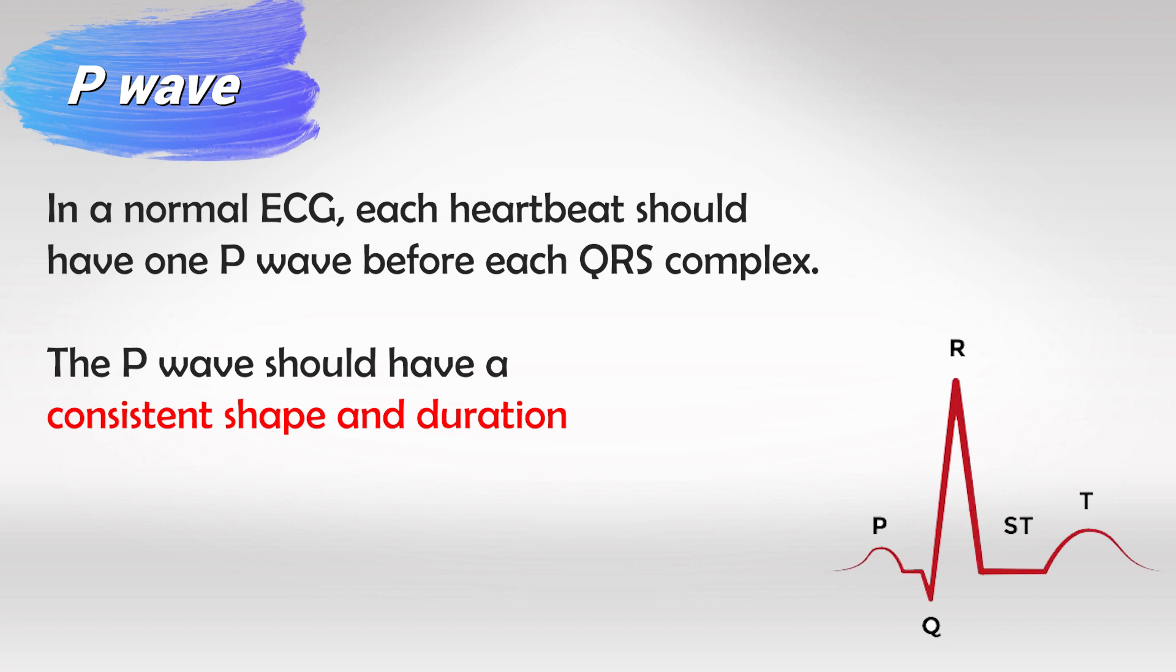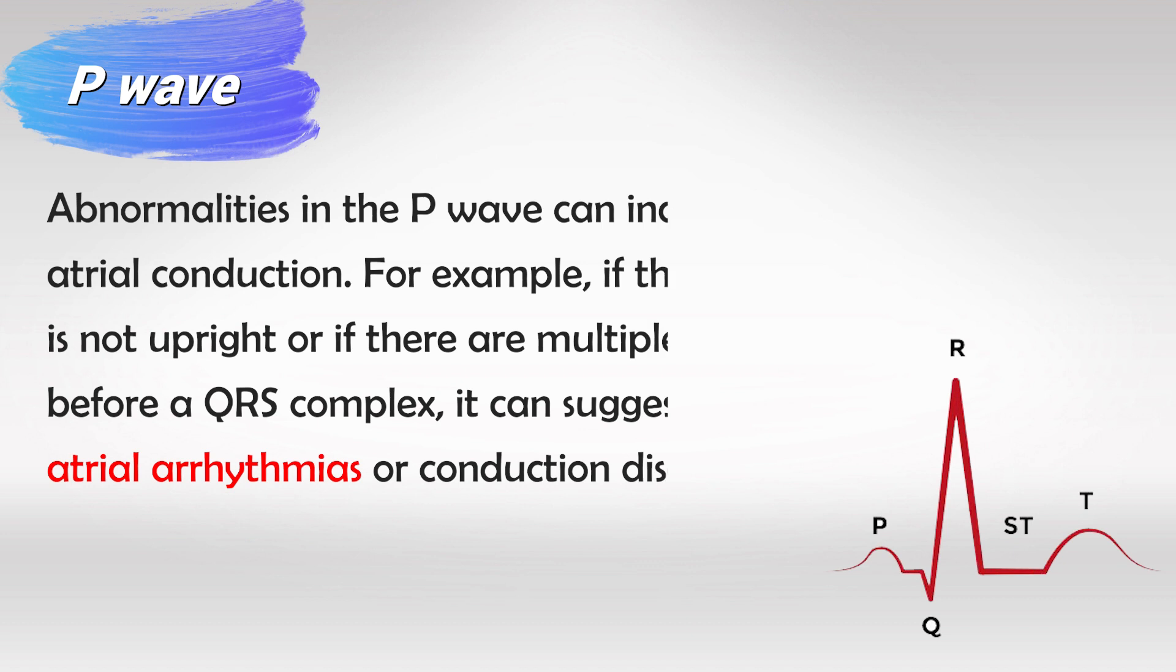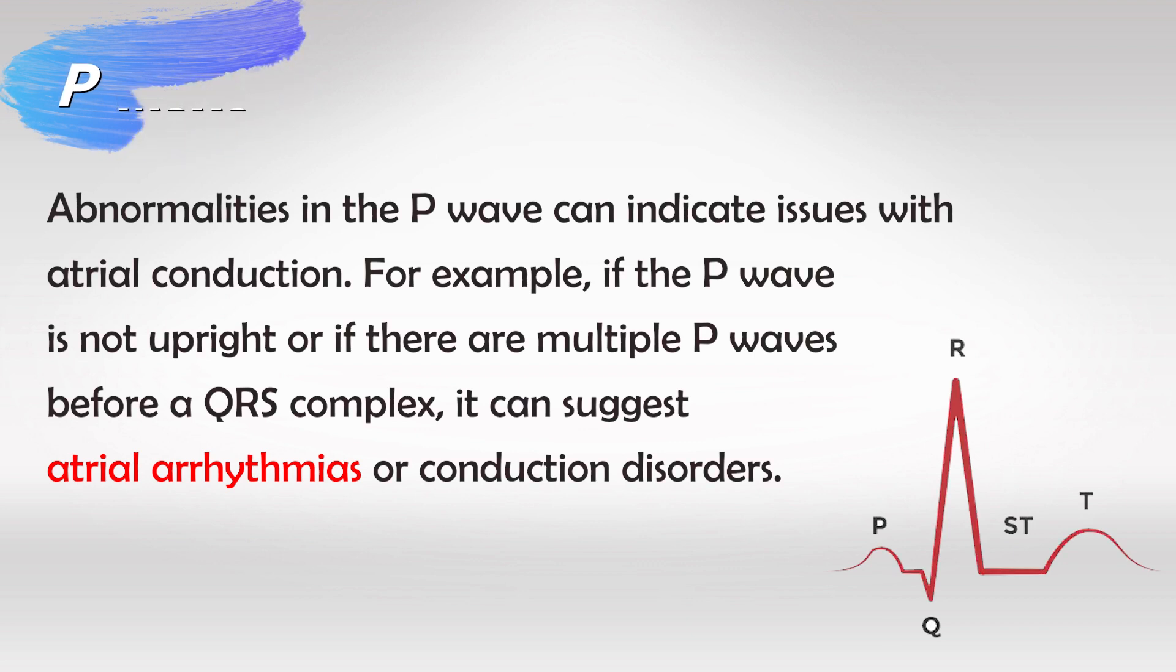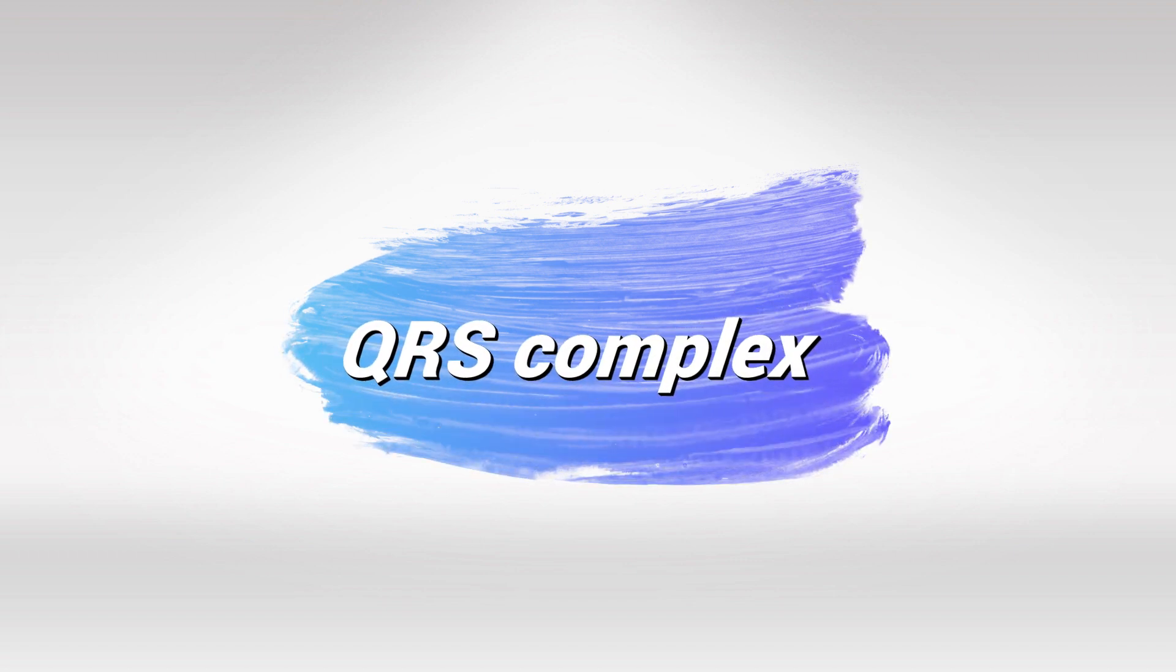All P waves in the ECG should be exactly the same size and the same shape and they should be followed by QRS complexes which we'll talk about in a second. Like we said, when a P wave is shown in the ECG it means that the atria has contracted and the P wave simply indicates the atrial rhythm.